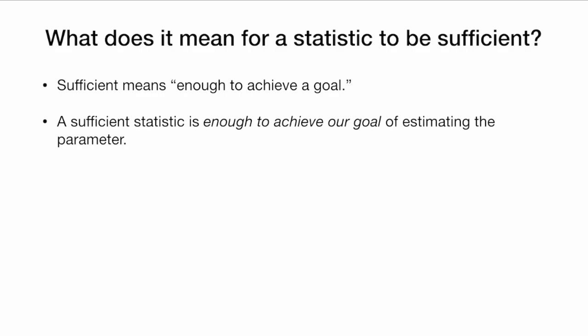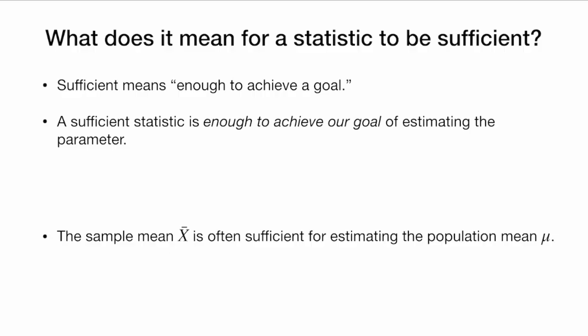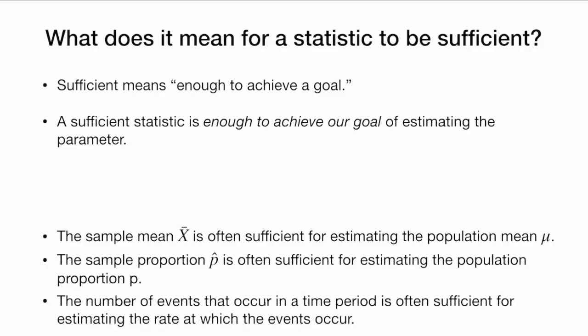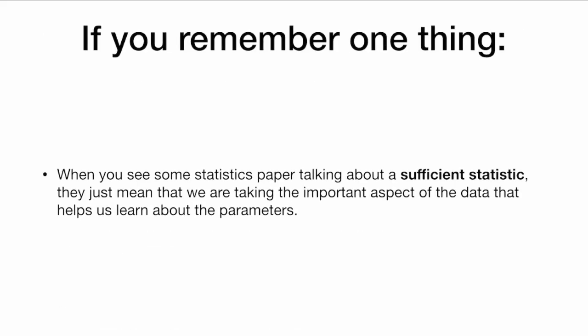What does it mean for a statistic to be sufficient? Sufficient means enough to achieve a goal. Our goal is to estimate the parameter, so a sufficient statistic is enough to achieve our goal of estimating the parameter. The sample mean x-bar is often sufficient for estimating the population mean mu. The sample proportion p-hat is often sufficient for estimating the population proportion p. And the number of events that occur in a time period is often sufficient for estimating the rate at which events occur. When we see a statistics paper talking about a sufficient statistic, all they mean is that we are taking the important aspect of the data that helps us learn about the parameters — that helps us learn about the population.